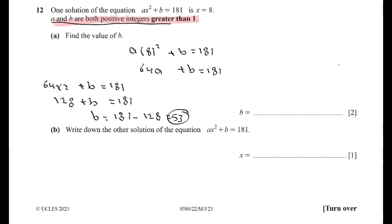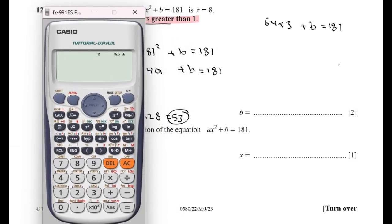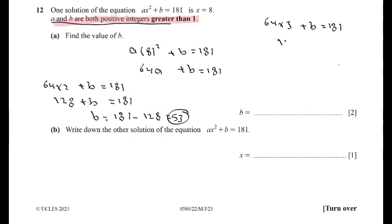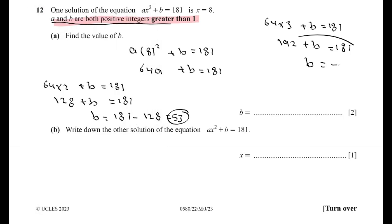Now let's try a equals 3: 64 times 3 plus b equals 181. 64 times 3 equals 192. 192 plus b equals 181. b equals 181 minus 192 equals negative 11. b cannot take the value negative 11 because a and b are two positive integers greater than one, so this answer is refused. We cannot take a equal 3 because b will have a negative value. a must be equals 2 and b must be equals 53. Then the answer is 53.